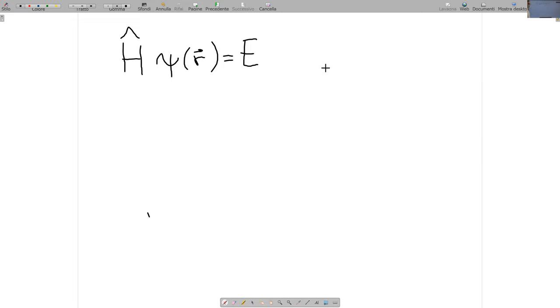Ottengo questa equazione qua. Allora, questa si chiama equazione di Schrödinger indipendente dal tempo o stazionaria.